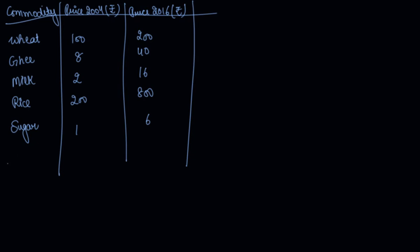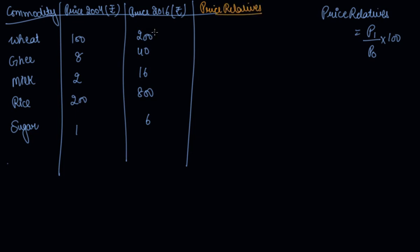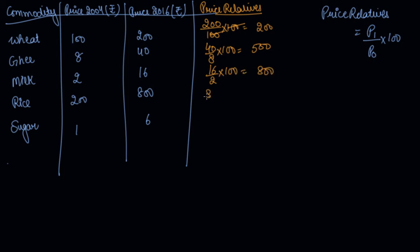In the price relative method, the first step is to find the price relatives using: price of current year divided by price of base year into 100. For the first commodity: 200 divided by 100 into 100 equals 200. Then 40 divided by 8 into 100 equals 500. Then 16 divided by 2 into 100 equals 800. Then 800 divided by 200 into 100 equals 400. And 6 divided by 1 into 100 equals 600.